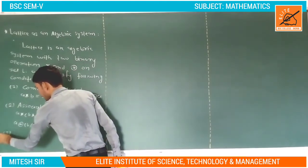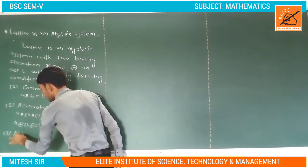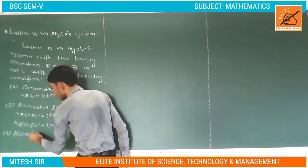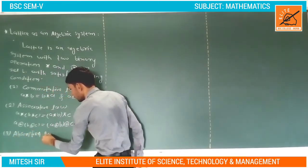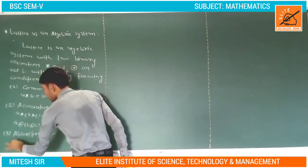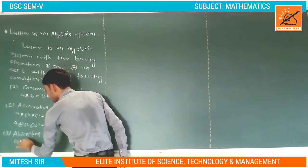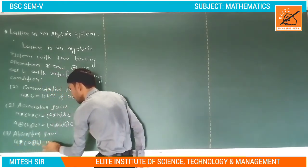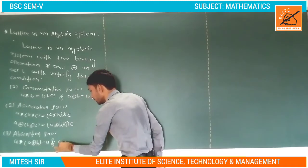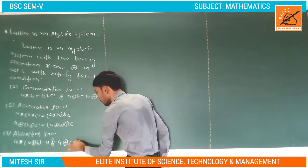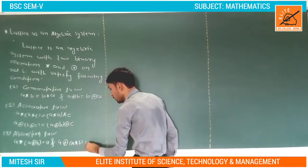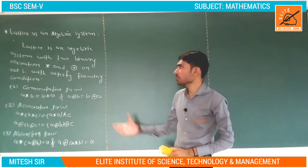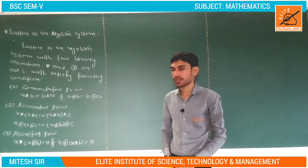The third condition is the absorption law: A star (A ringsum B) is equal to A, and A ringsum (A star B) is equal to A. So this is the definition of the lattice algebraic system.